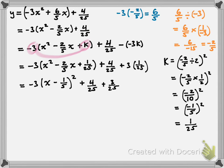The last thing we do is combine 4 over 25 and 3 over 25, which adds to give us 7 over 25. So we end up with negative 3 times x minus 1 fifth squared plus 7 over 25, which is now in vertex form. I hope these two examples have been helpful for you. Take care.